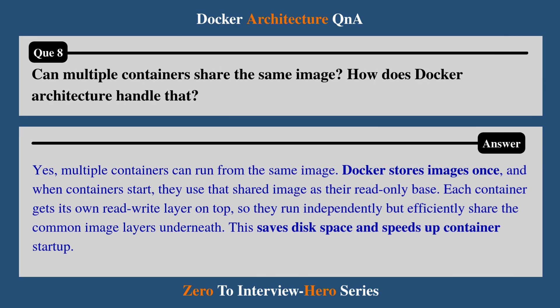Question 8: Can multiple containers share the same image? How does Docker architecture handle that? Yes, multiple containers can run from the same image. Docker stores images once, and when containers start, they use that shared image as their read-only base. Each container gets its own read-write layer on top, so they run independently but efficiently share the common image layers underneath. This saves disk space and speeds up container startup.